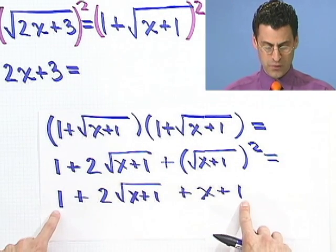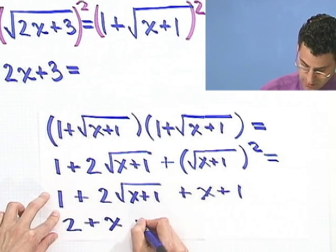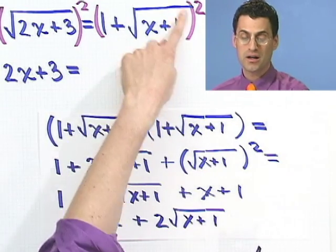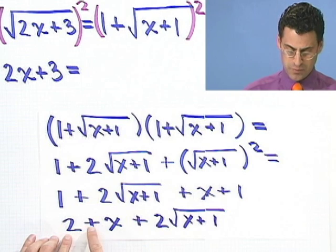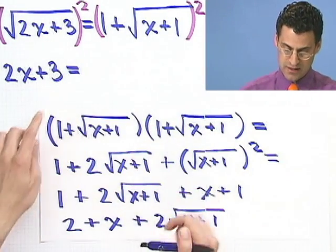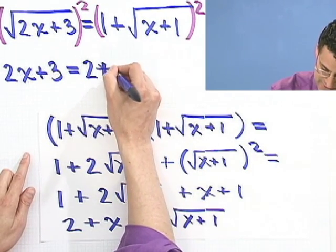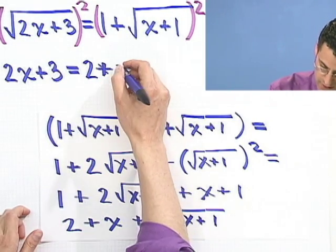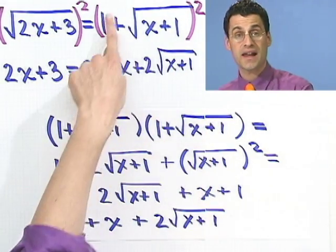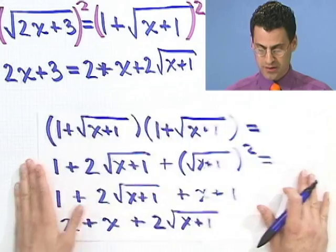And then what's the last times the last? Well, that's going to be the square root of x plus 1 squared. Square root of x plus 1 squared. And what happens? Well, the square root and the square, they kill each other. They cancel each other out. So it lifts the radical. And so I'm left with this equals 1 plus 2 square root x plus 1 plus, and then I just have x plus 1. So I can do a little bit of combining here. The 1 and the 1, that makes 2. Let me write the x over here, too. And then I'm left with 2 times the square root of x plus 1.